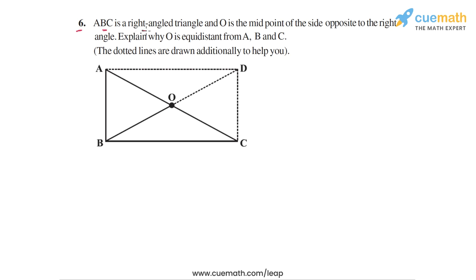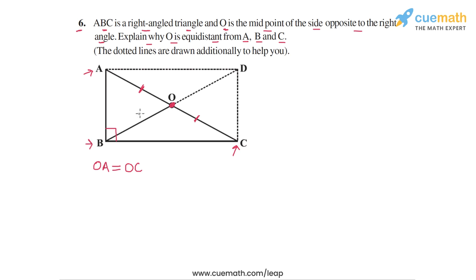Question 6 says that ABC is a right-angled triangle and O is the midpoint of the side opposite to the right angle. ABC in this figure is right-angled at B and point O is the midpoint of AC, so OA is equal to OC. The question says: explain why O is equidistant from A, B, and C. The fact that O is equidistant from A and C is obvious because O is the midpoint of AC, but we also have to prove that OB equals OA and OC.